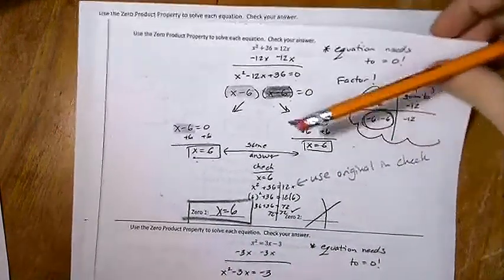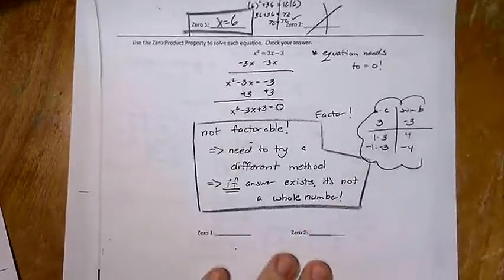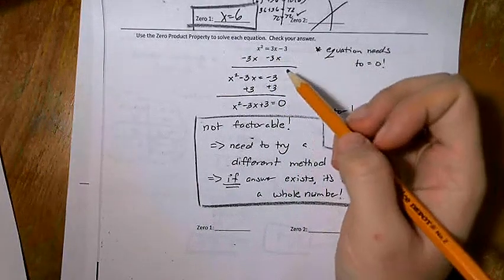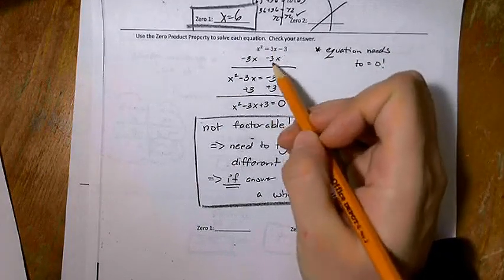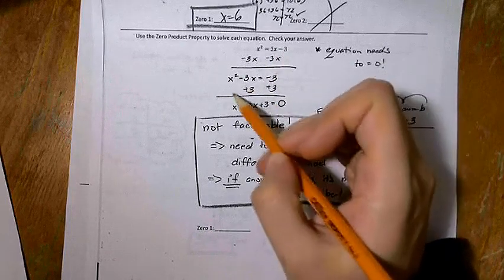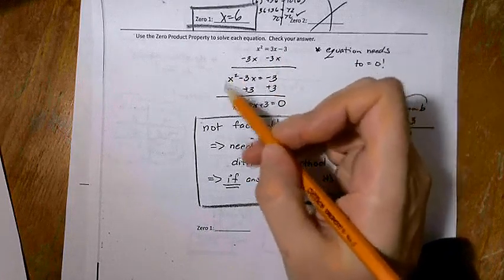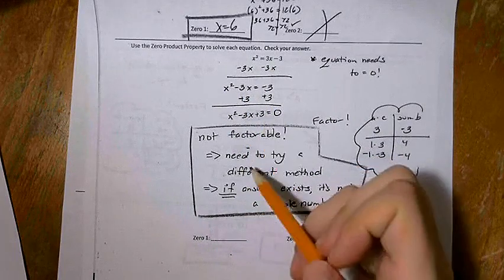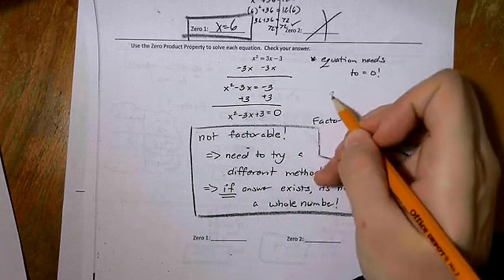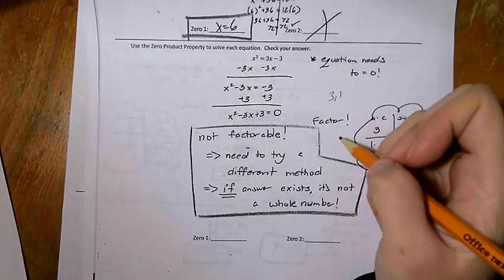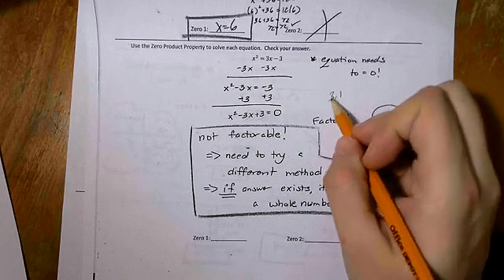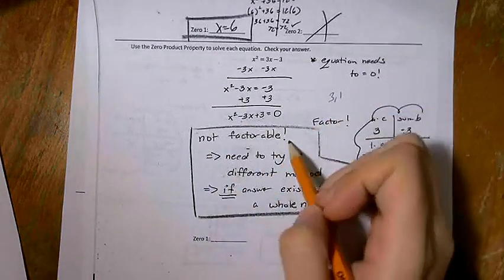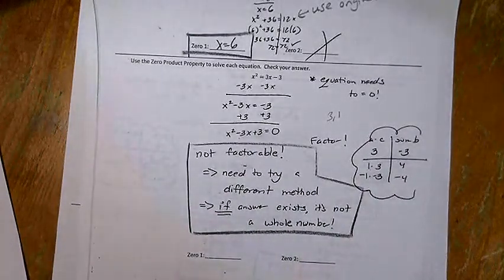Let's look at the bottom one. I like to subtract the 3x and then add the 3 so I get everything on one side, keeping my x squared nice and positive. So we've got x squared minus 3x plus 3. How do I factor it? The multiples of 3 are only 3 and 1. How can I get those to add to make negative 3? I can't. It's not factorable.